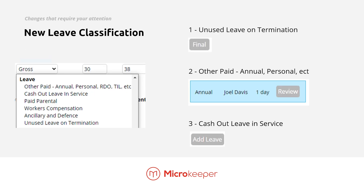Up next, we have the new leave classification — this is probably the most administratively demanding new change to Phase 2. All these new classes have to be used under different circumstances. Paid parental, workers comp, and defence leave are pretty self-explanatory. But other paid, cash out leave in service, and unused leave on termination will require additional admin. Unused leave on termination is straightforward — when you click the final button for the employee, any leave will be marked as unused leave on termination. Other paid is for when the employee takes normal OTE as leave — so if they usually get paid 38 hours and take a day off but still get paid 38, other paid would be the correct classification.